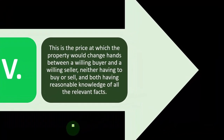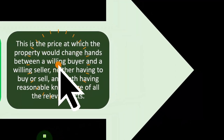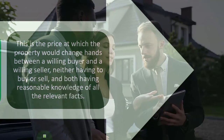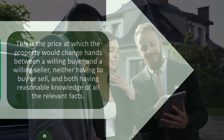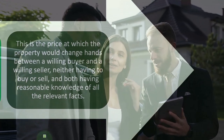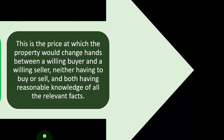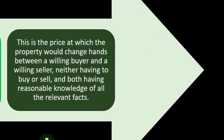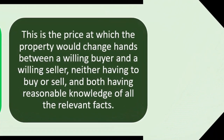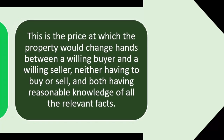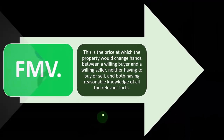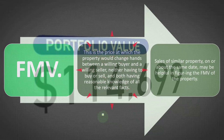Fair market value is the price at which the property would change hands between a willing buyer and a willing seller, neither having to buy or sell, and both having reasonable knowledge of all the relevant facts. This is a great concept used all the time, but in practice it's quite difficult — almost impossible to know precisely, because all real estate is unique, unlike stocks. If you allow fair market value to be adjusted freely, you end up with appraisals that are too high or too low depending on what someone is trying to accomplish.